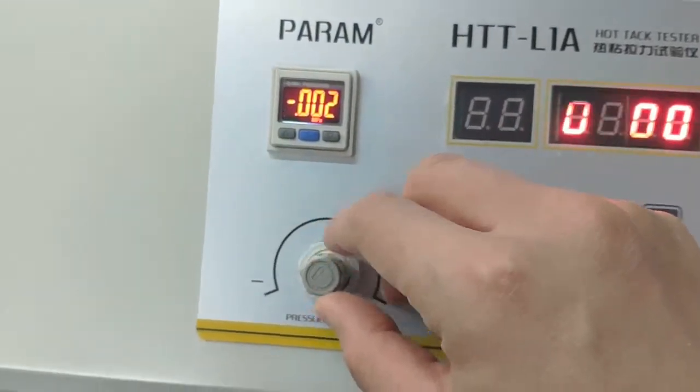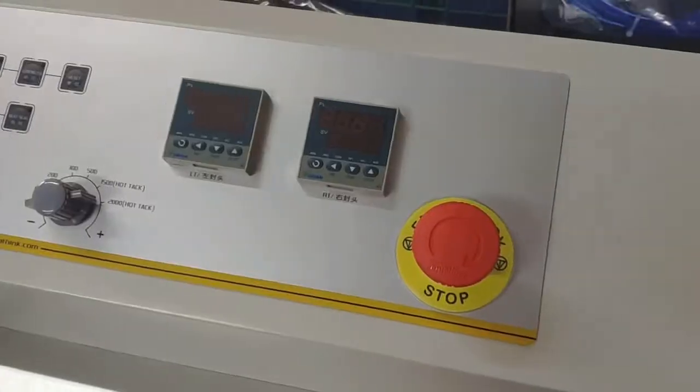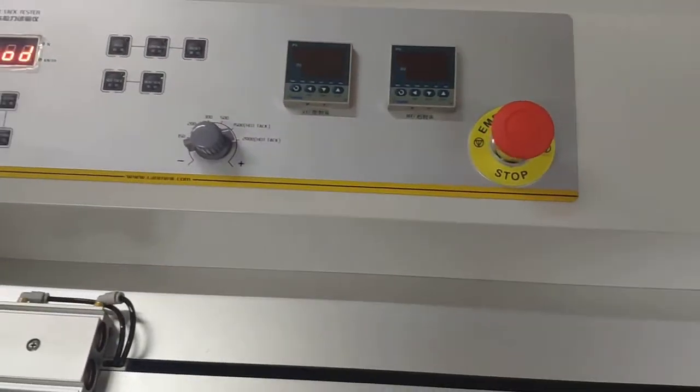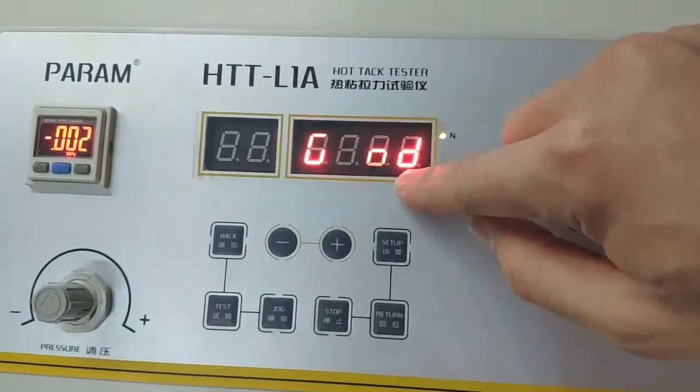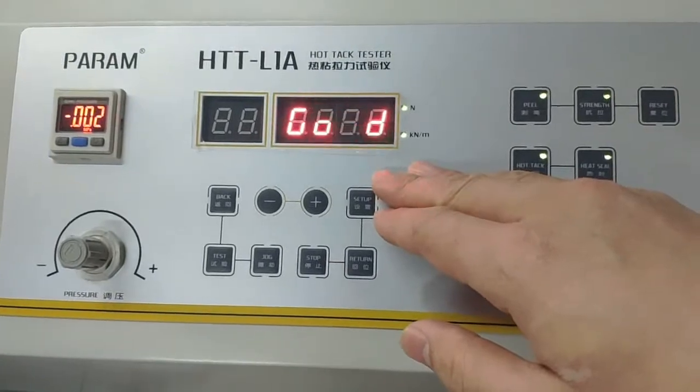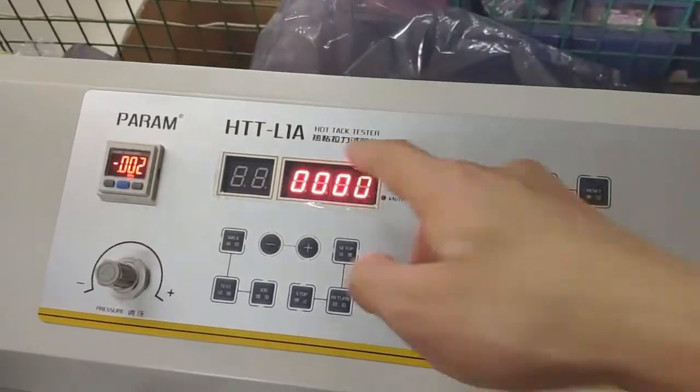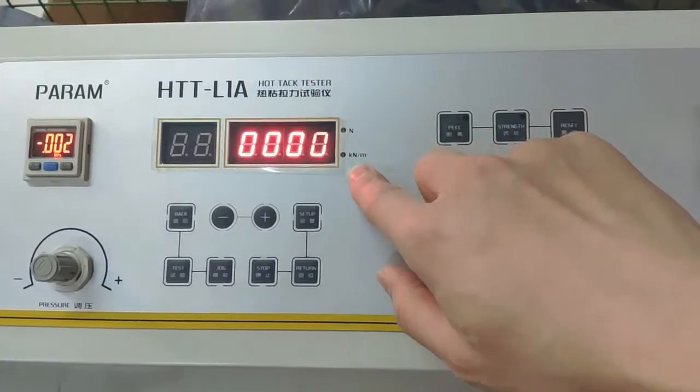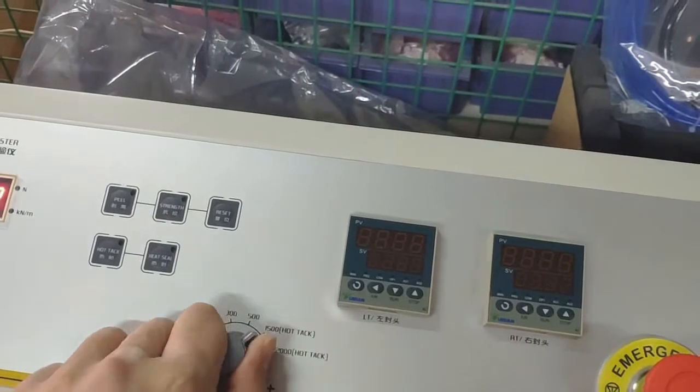Here is the pressure gauge. You can adjust the pressure by this knob. Now power on this instrument and you will see there is a warm-up time. It will require 10 minutes to finish the warm-up. After 10 minutes you'll come to this display, which means the warm-up time is finished.